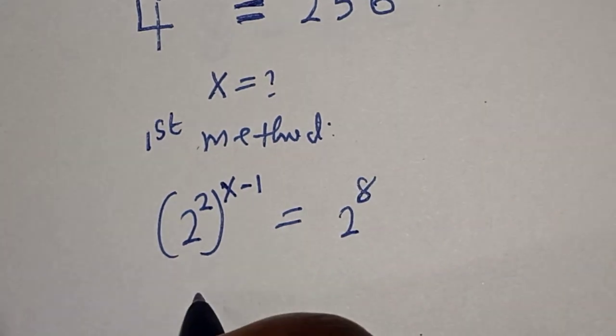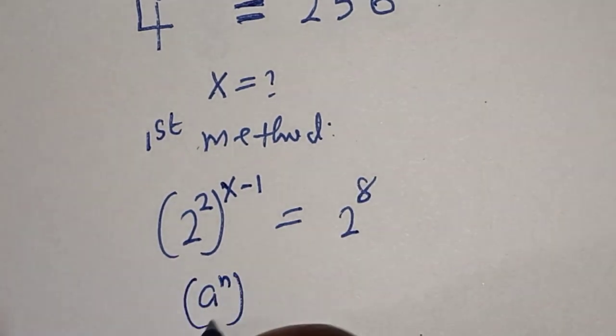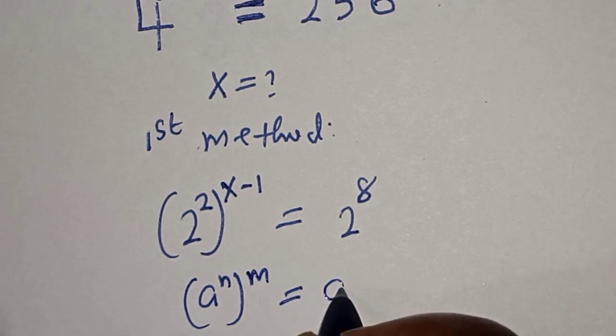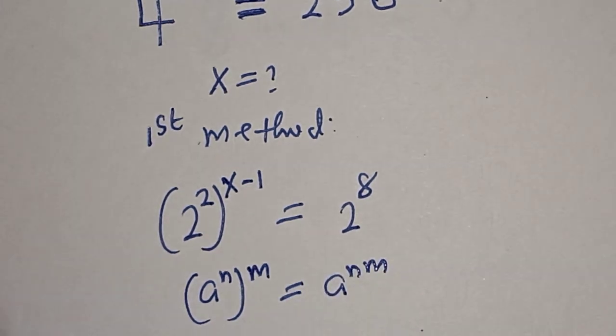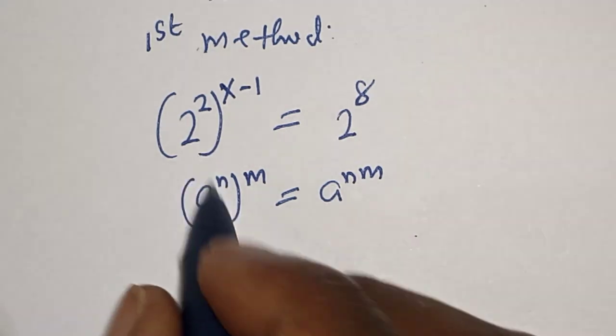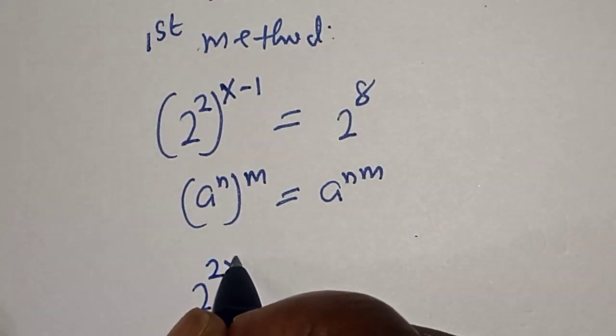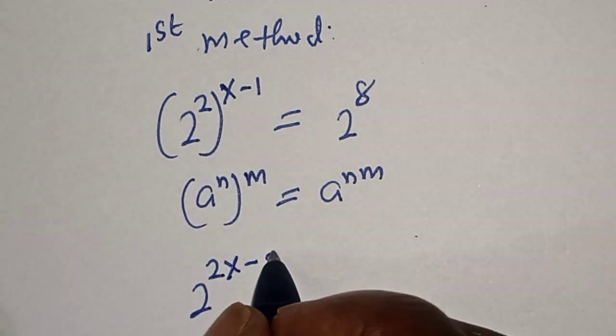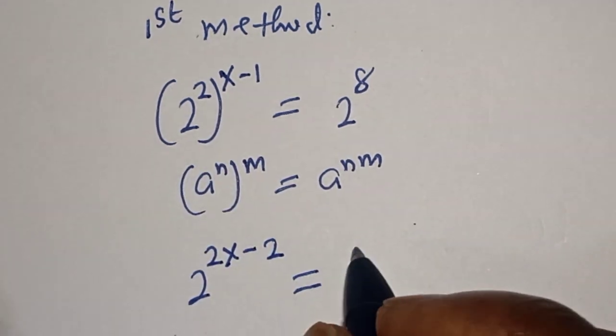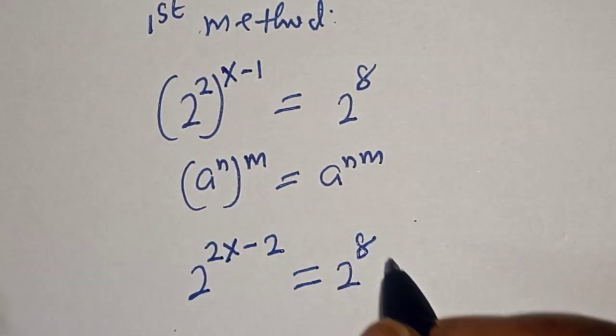Take note of this rule: a raised to power n to the power of m is equal to a raised to power nm. Then this is 2 raised to power 2 times x, 2x minus 2 times 1, which is 2, equal to 2 raised to power 8.